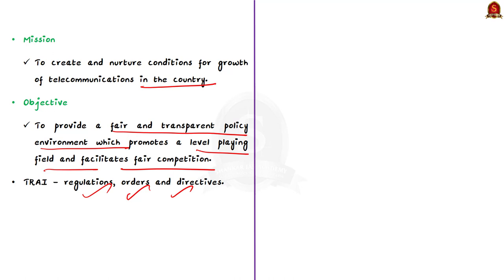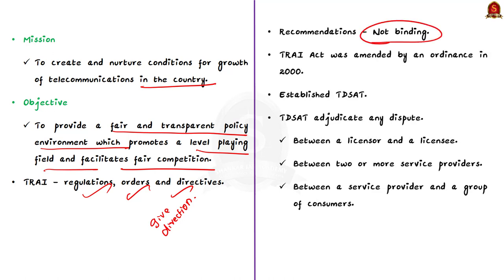TRAI has issued a large number of regulations, orders, and directives over time, covering a wide range of subjects including tariffs, interconnection, quality of service, and governance of the authority. Note that the recommendations made by TRAI are not binding on the central government. The TRAI Act was amended by an ordinance in 2000, leading to the establishment of the Telecommunications Dispute Settlement and Appellate Tribunal — TDSAT — which took over adjudicatory and disputes functions from TRAI.